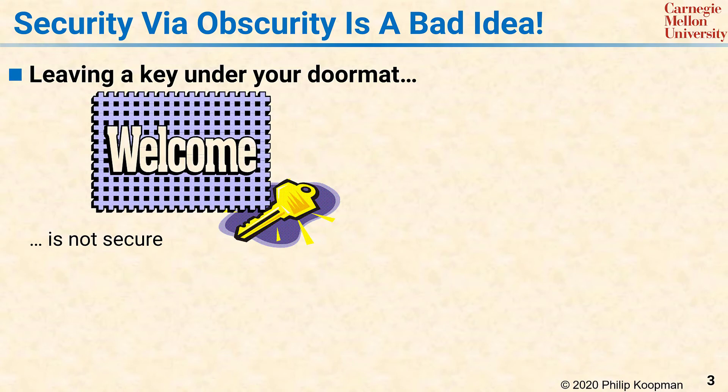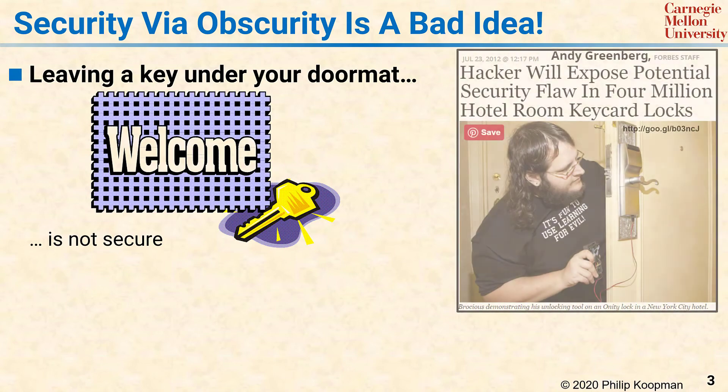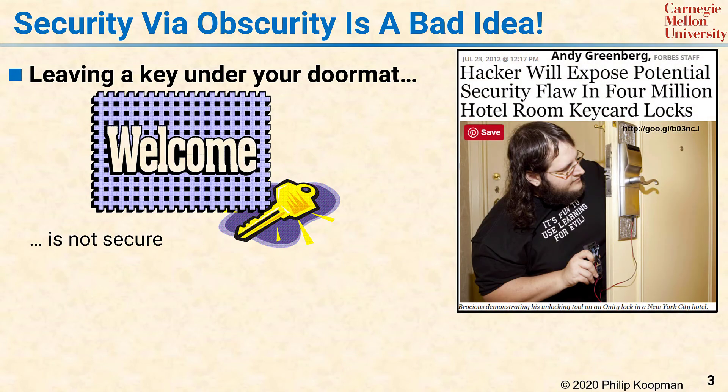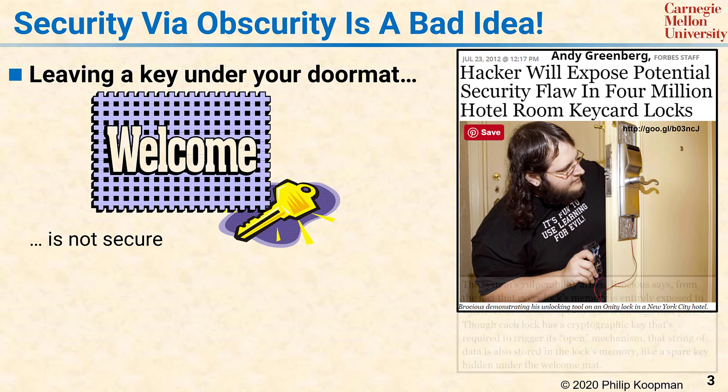You might think that this is too simplistic a model for computer security, but consider a security flaw that was found in millions of hotel room computerized door locks. Each door lock had a maintenance port on the outside of the door, enabling an attacker to just plug in from the hallway, scan the lock's memory for its secret key, and then feed the key to the lock, causing the door to pop open. Basically, the key to the lock was hidden under the doormat.